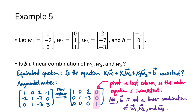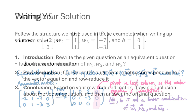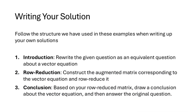You should follow this structure when writing your solutions. Don't just set up and row reduce an augmented matrix. First, rewrite the given question as an equivalent question about a vector equation. That vector equation corresponds to an augmented matrix, which you row reduce. Then analyze the row-reduced matrix to understand what it tells you about the vector equation. Finally, clearly answer the original question — if it asks whether a vector is a linear combination, say yes or no and explain your reasoning.